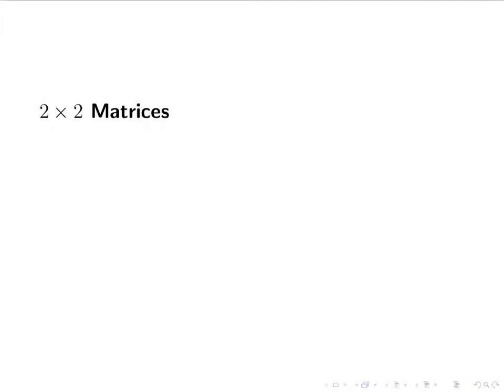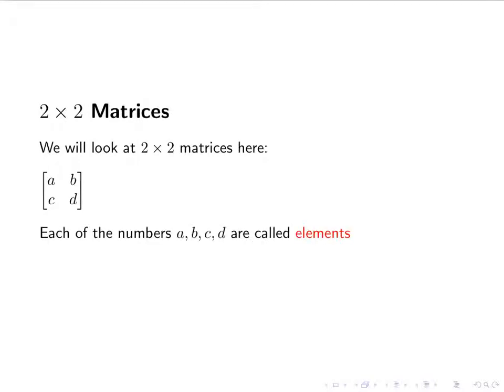Hello everyone, today we're going to be looking at 2 by 2 matrices. A 2 by 2 matrix looks like the following: we have a 2 by 2 set of numbers — A, B, C, and D — with giant brackets around them. These numbers are called elements, so a 2 by 2 matrix has 4 elements, because 2 times 2 is 4.